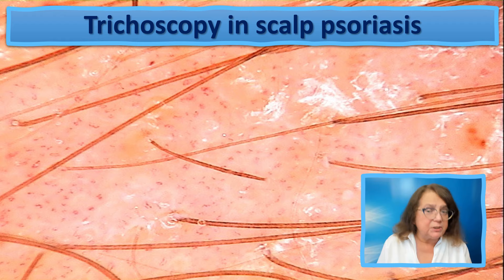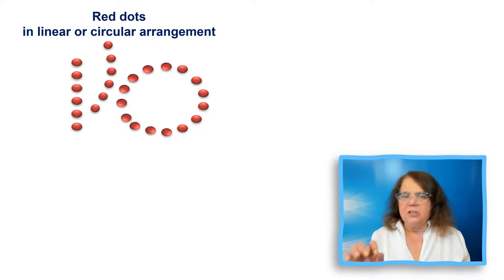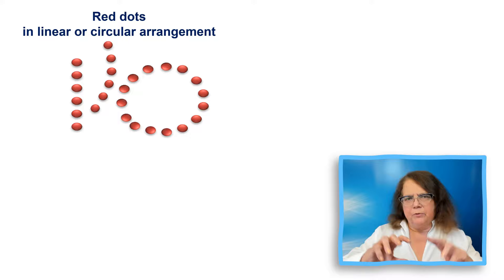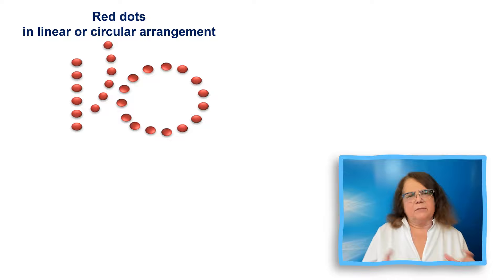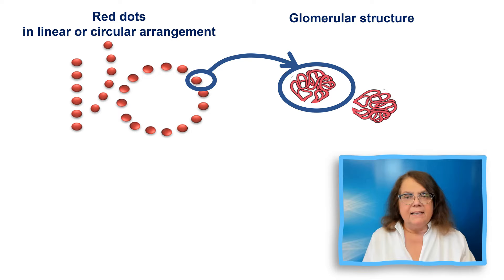This is a typical trichoscopy image of psoriasis of moderate activity with visible blood vessels and some diffuse scaling. A very typical trichoscopy feature of scalp psoriasis is the presence of multiple blood vessels arranged either in lines or in circles. When we use a handheld dermoscope, these blood vessels appear usually as dots. If we use high magnification, for example with a digital dermoscope, we will see that they have a glomerular structure.